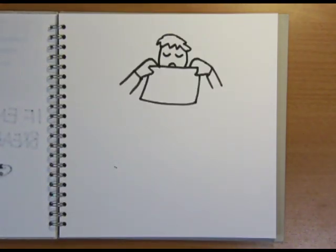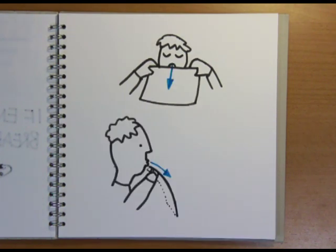If you want to see the Coanda effect at home, just hold a piece of paper up to your mouth and blow over the top surface. The paper should move upwards as the air sticks to the surface and lifts it up.